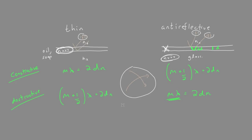Okay, so the equation you would use for constructive interference in thin films, you would now use for destructive interference in anti-reflective coatings, which are also thin films again.